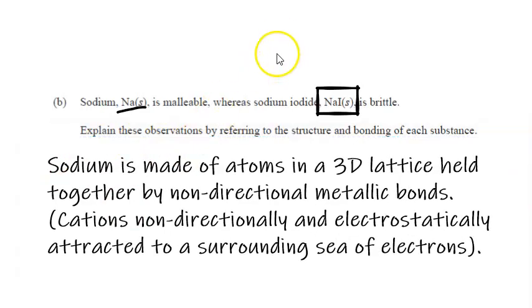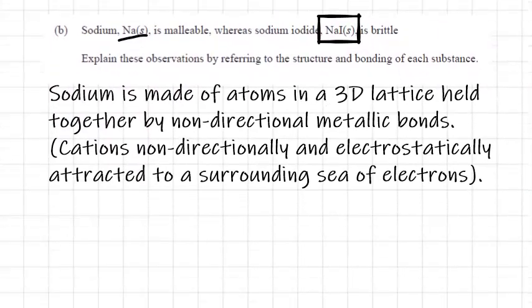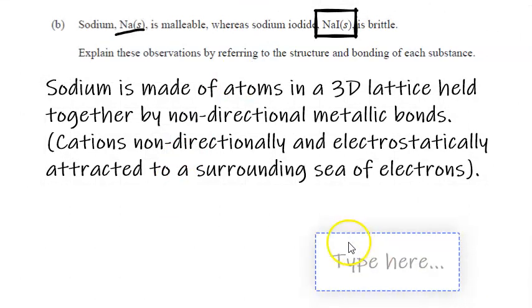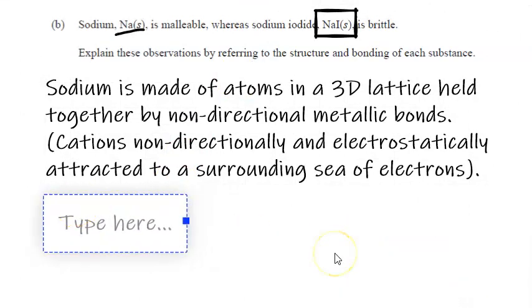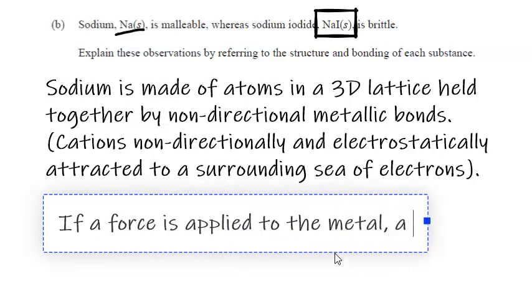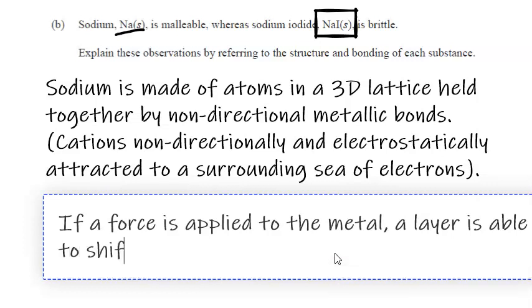So we've started off by describing the structure and bonding of the metal. We now need to talk about why it is that that metal is malleable. So we would say, if a force is applied to the metal, a layer is able to shift without